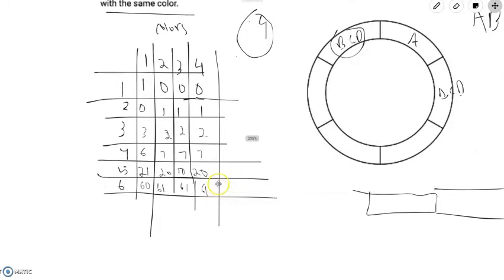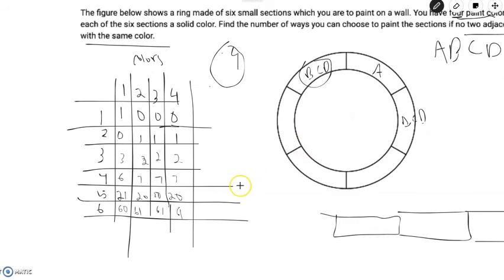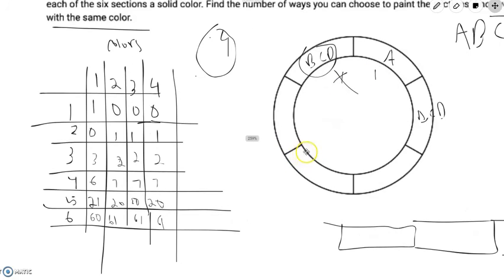And now remember, basically what this means is that if you start with color A or color one, there would eventually be 60 ways to put color one in the last section, 61 ways to put colors two, three, and four. But as we established earlier, we can't have the same colors in the last section. So we cannot have a one here, but we can have a two, three, or four.